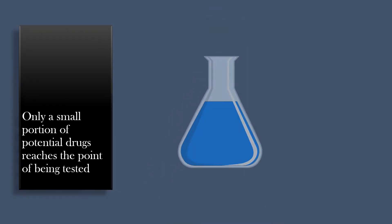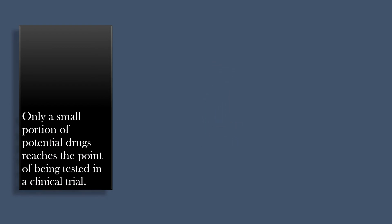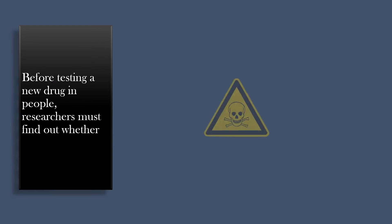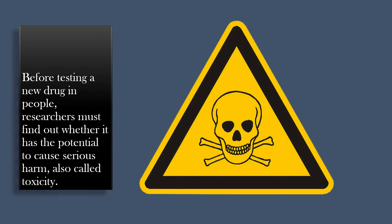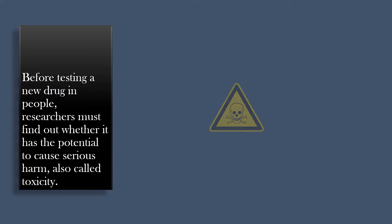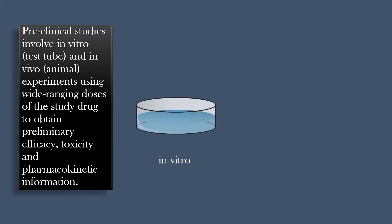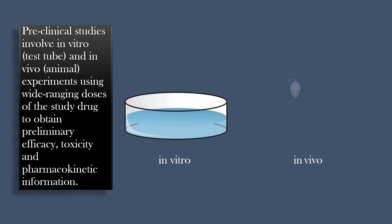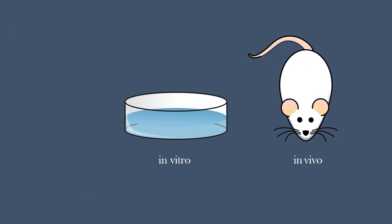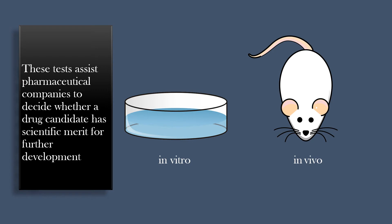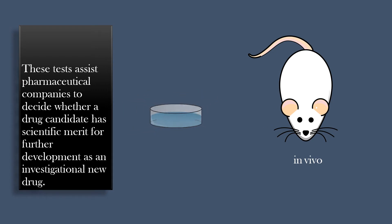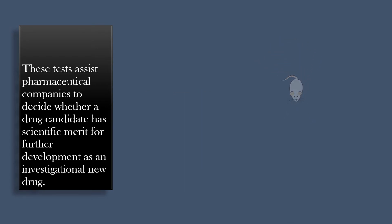Only a small portion of potential drugs reaches the point of being tested in a clinical trial. Before testing a new drug in people, researchers must find out whether it has the potential to cause serious harm, also called toxicity. Preclinical studies involve in vitro (in test tube) and in vivo (on animal) experiments using wide-ranging doses of the study drug to obtain preliminary efficacy, toxicity, and pharmacokinetic information. These tests assist pharmaceutical companies to decide whether a drug candidate has scientific merit for further development as an investigational new drug.